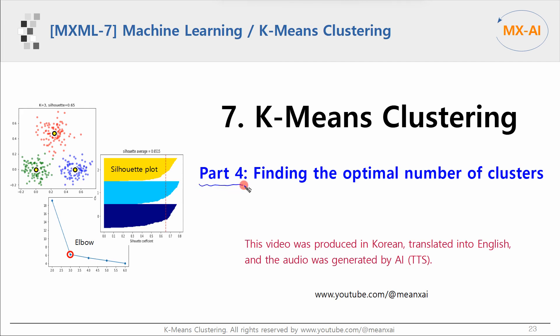This is the last part of a series on k-means clustering. In this video, we will look at how to determine the optimal number of clusters in k-means clustering. This video was produced in Korean and translated into English.